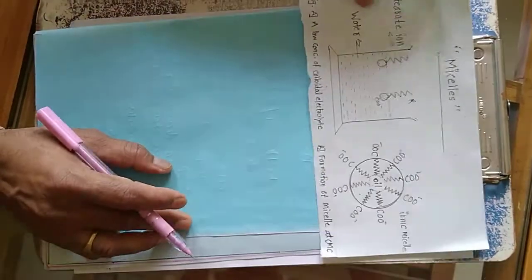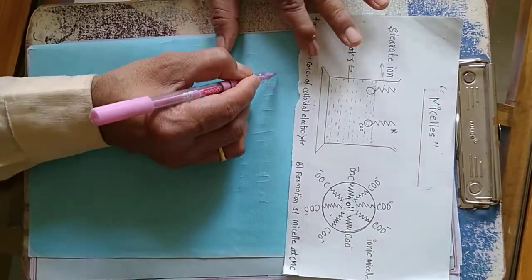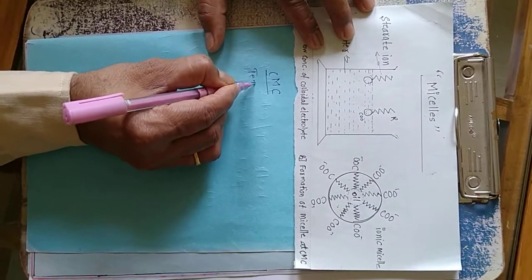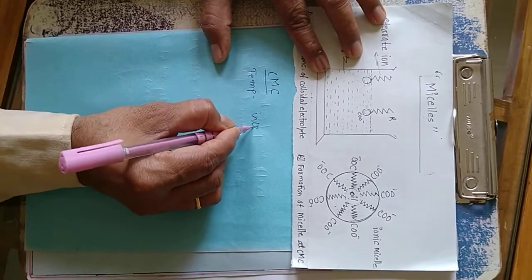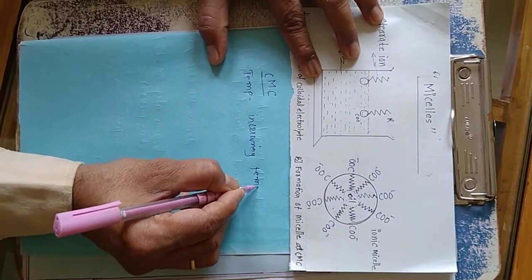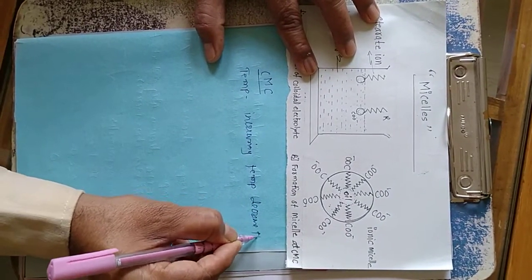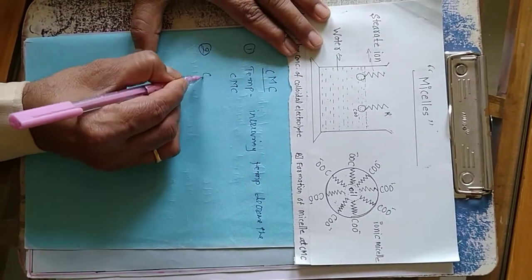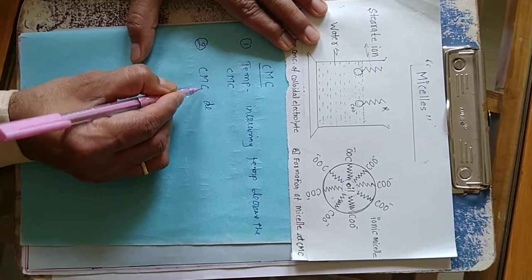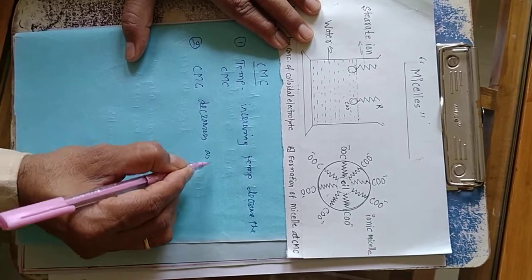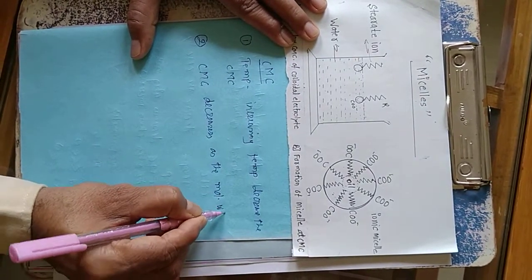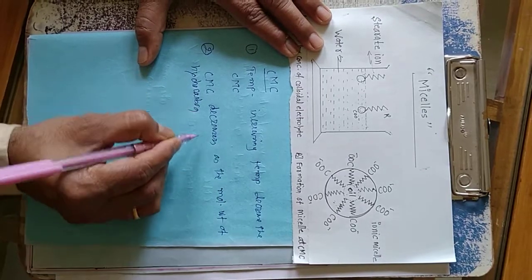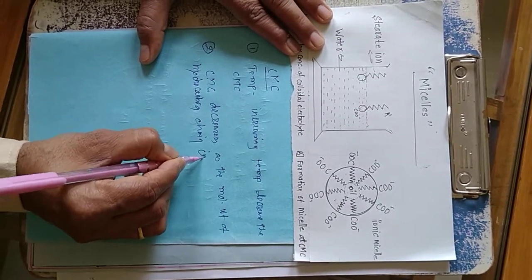Now, what factors affect the CMC — critical micelle concentration? First is temperature: increasing temperature decreases the CMC. Second, CMC decreases as the molecular weight of the hydrocarbon chain increases.